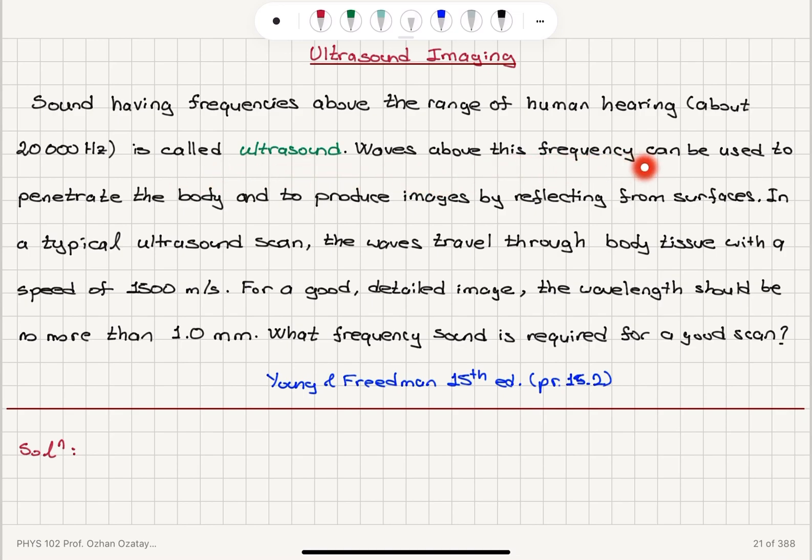Waves above this frequency can be used to penetrate the body and to produce images by reflecting from surfaces. In a typical ultrasound scan, the waves travel through body tissue with a speed of 1500 m per second.